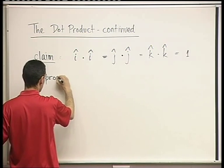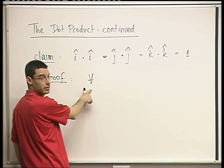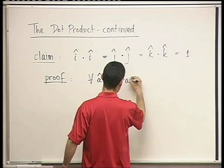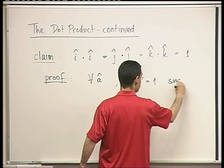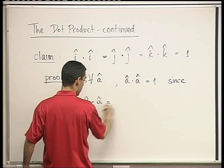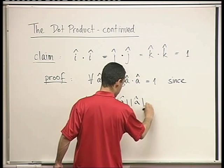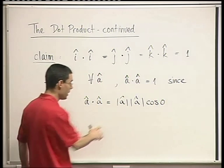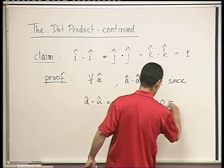So let's write the proof. For any unit vector a, a dot a equals 1. This is because a dot a, by definition, is the length of a times the length of a times cosine of 0 — that's the angle between a and itself. Each length is 1 because it's a unit vector, and cosine of 0 is 1. That's the proof.